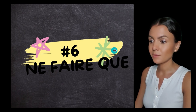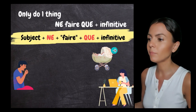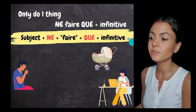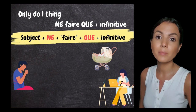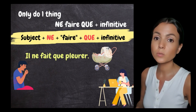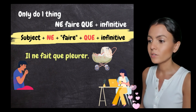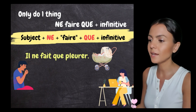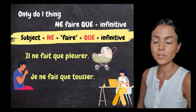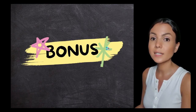Case number six — the most challenging: 'ne faire que'. We use this to say that someone is only doing one thing. The formula is 'ne faire que + infinitive'. For example, if a baby is always crying: 'il ne fait que pleurer'. When you are sick and coughing all the time: 'je ne fais que tousser'. If you work too much: 'je ne fais que travailler'. In spoken French you can drop 'ne': 'je fais que travailler'.